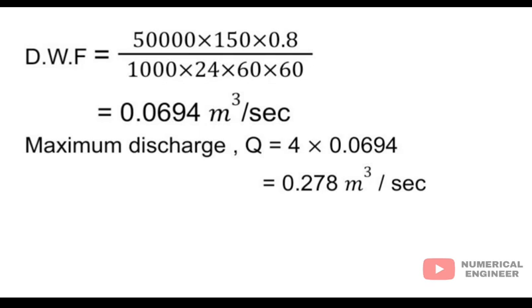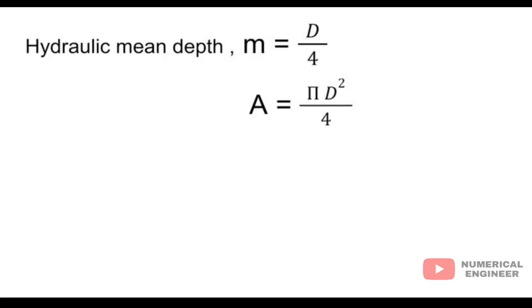As the question has mentioned four times the discharge, the maximum discharge is 0.278 meter cube per second. As you know, the hydraulic mean depth m equals d by 4, and the area is pi d squared by 4.